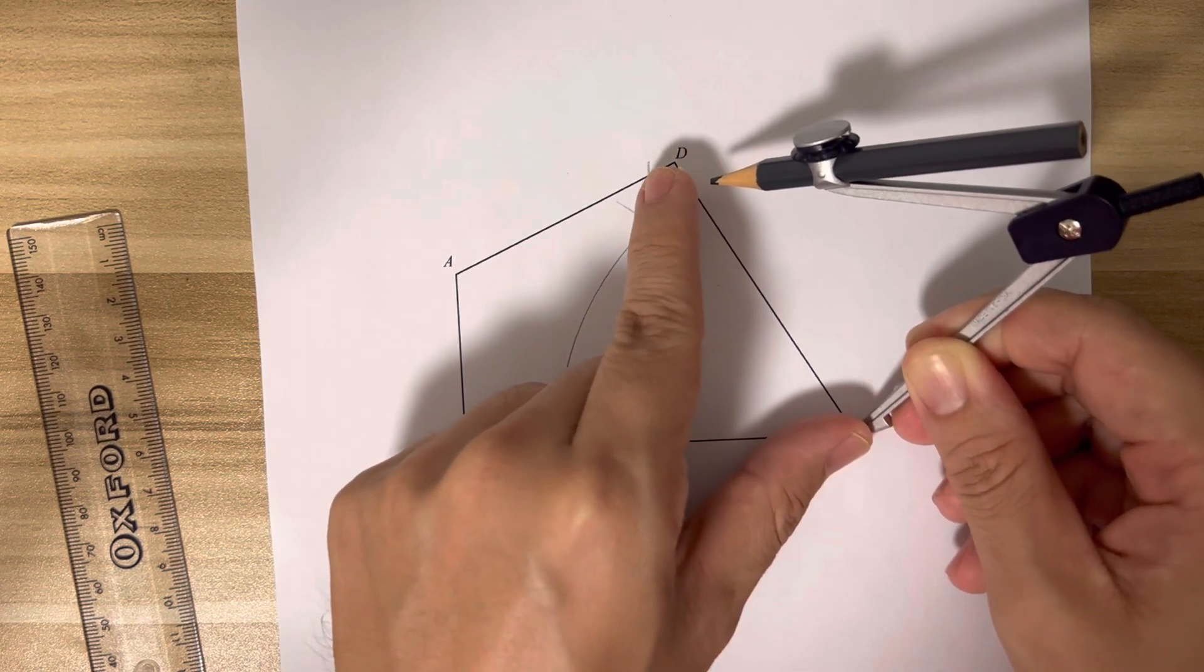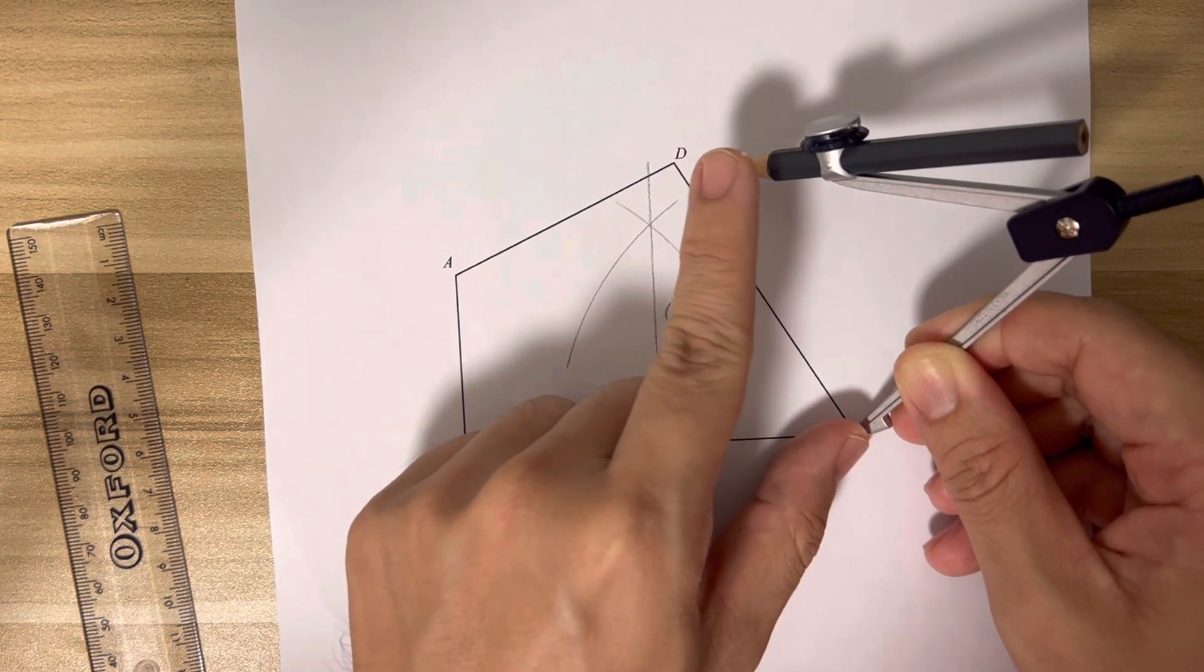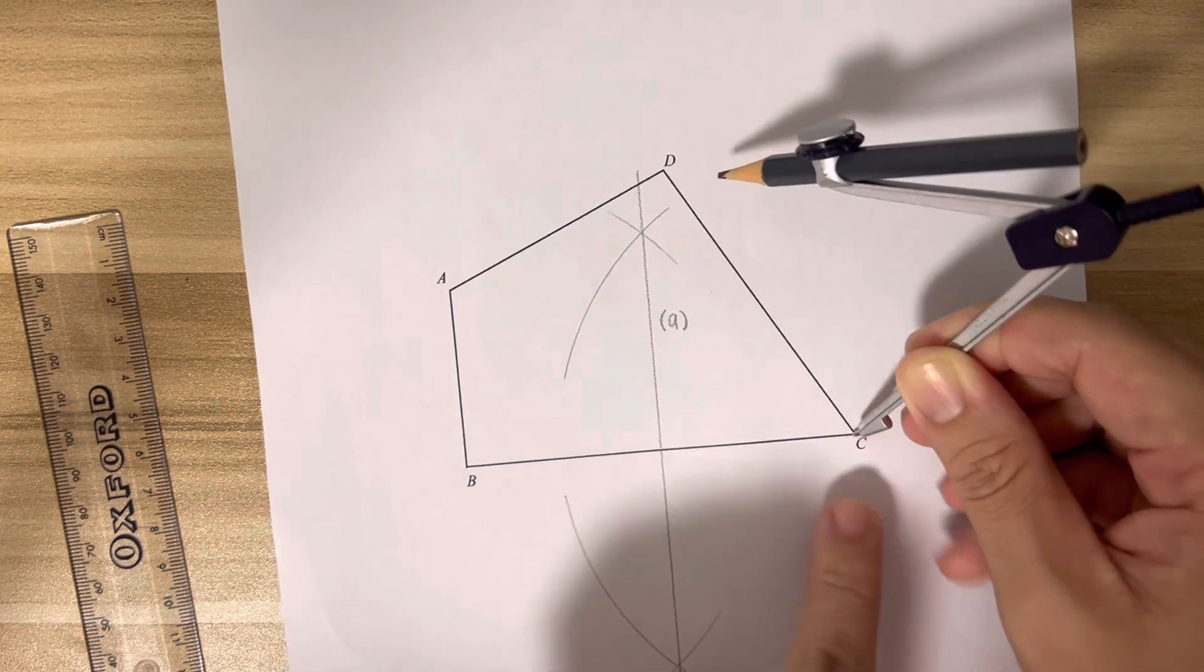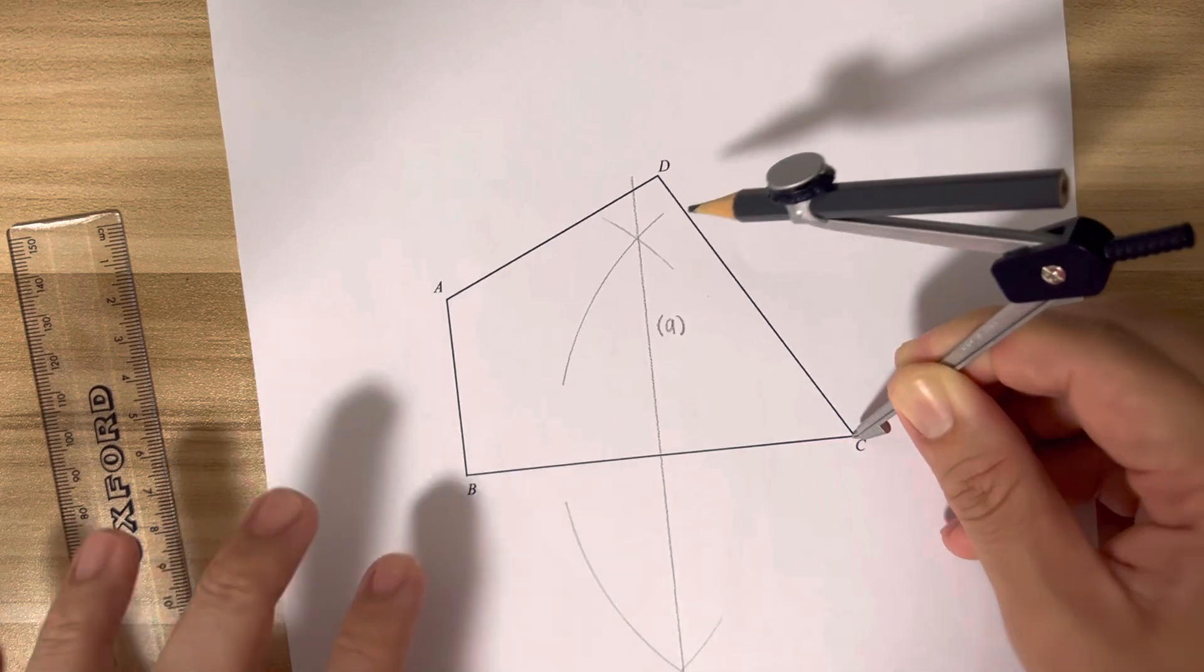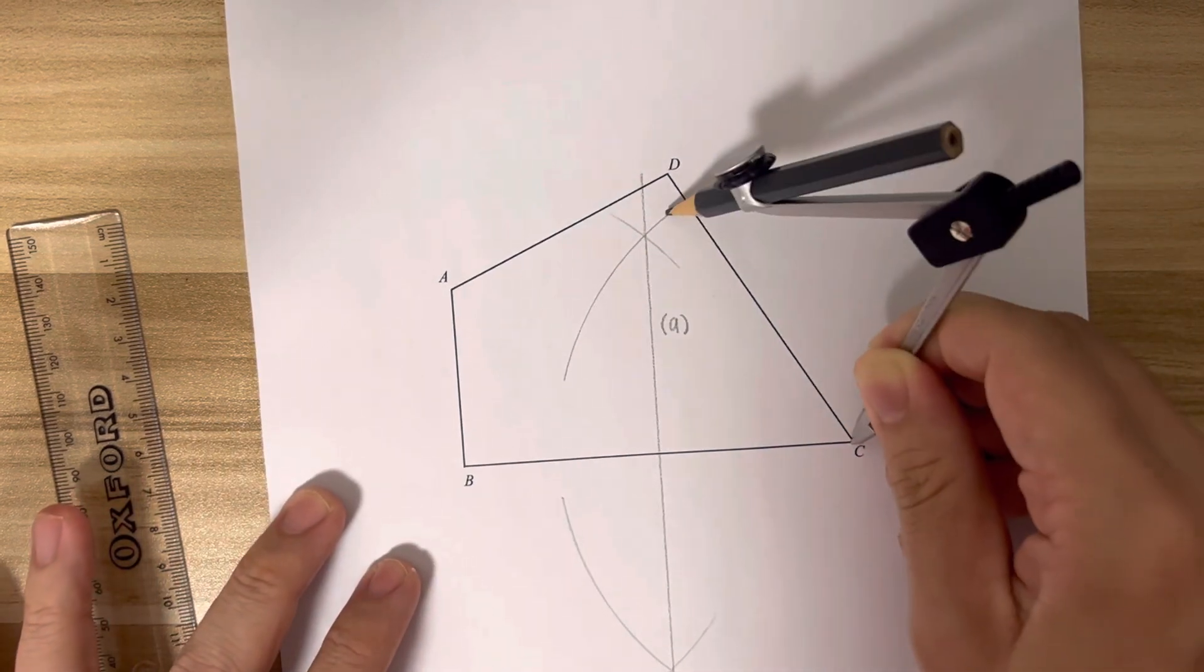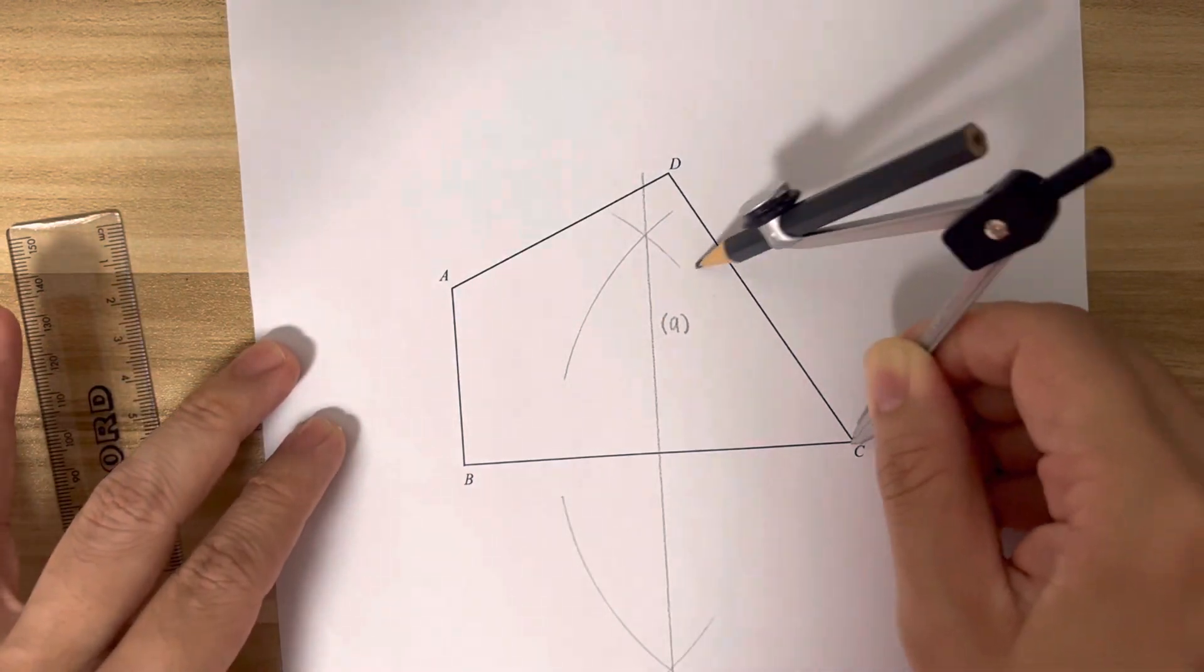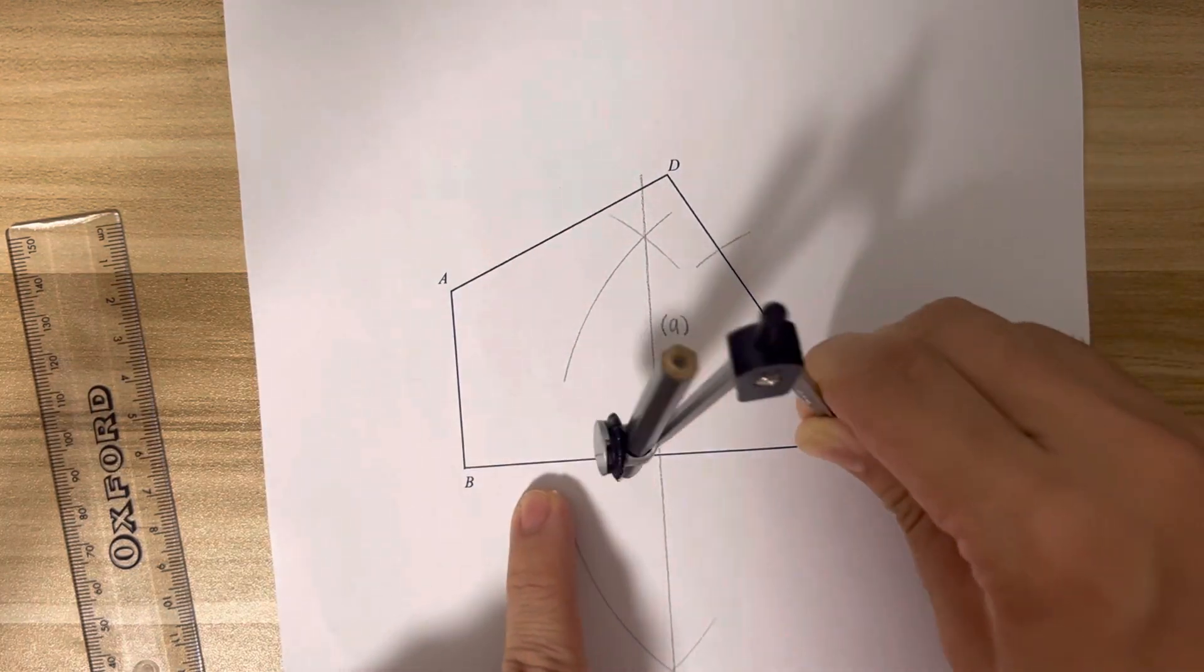The distance from the pointer tip to the pencil - you are able to cut the lines that make the angle. So in this case it's CD and CB. I'm going to just adjust, I'm going to cut one point here and one point here.